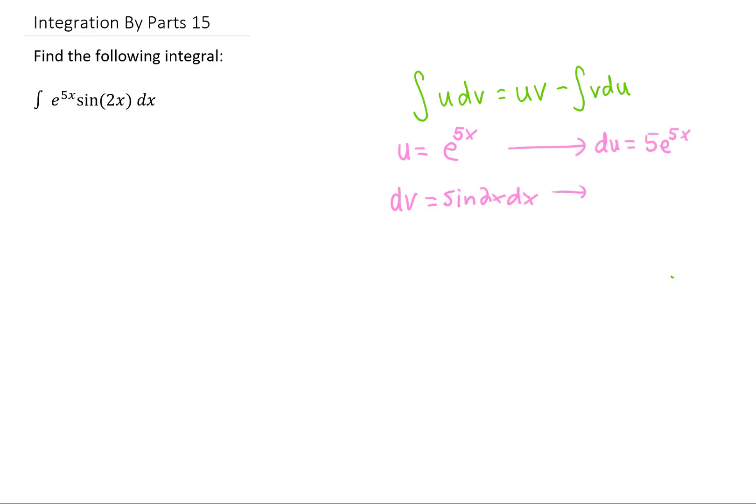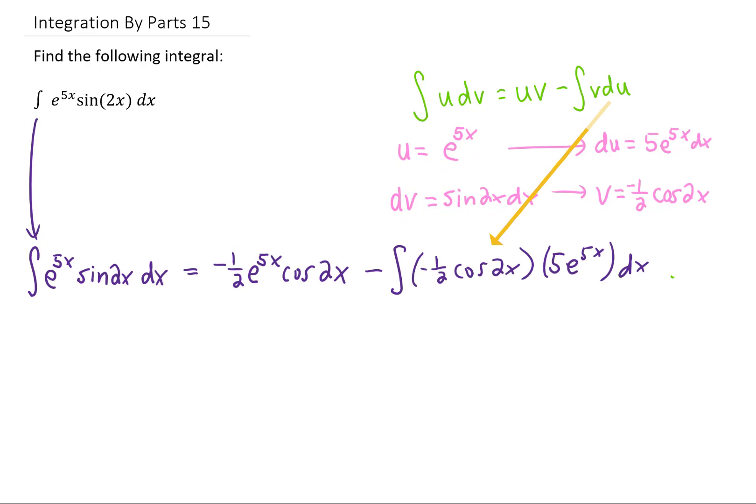The chain rule gives us du is 5e to the 5x, and a pretty simple u substitution would give us negative 1 half cosine of 2x is our v. Now, let's rewrite this integral, and using our integration by parts formula, we get u times v minus the integral of v du. Just a little bit of simplification gives us this integral here.